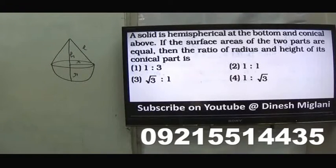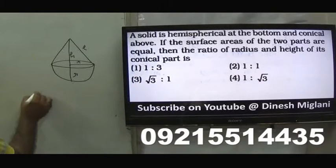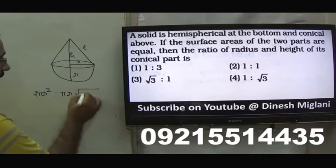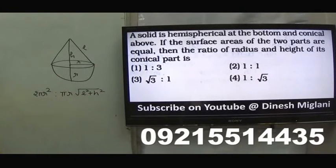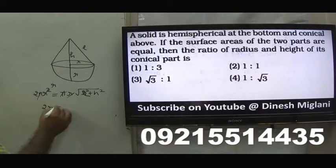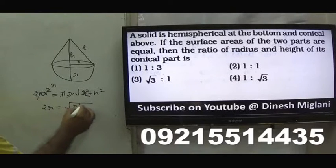The hemispherical surface area is 2πr², since the total sphere is 4πr². The outer part of the hemisphere is 2πr². The lateral surface area of the cone is πrl, which equals πr times √(r² + h²). Setting these two equal and cancelling π and r, we get 2r = √(r² + h²). We need to find the ratio r:h.